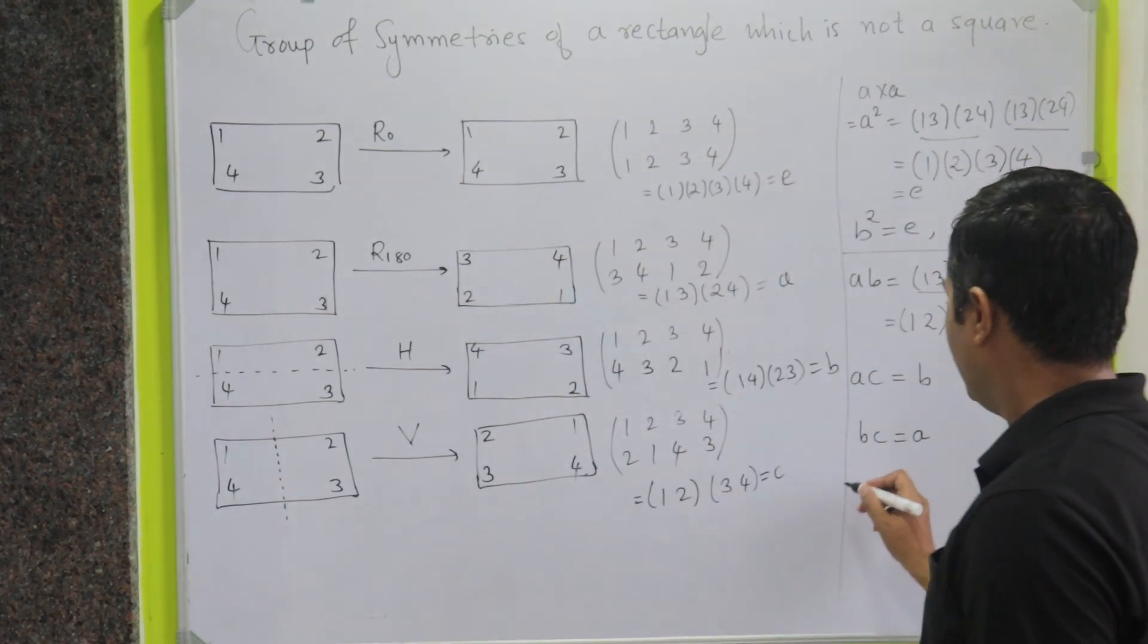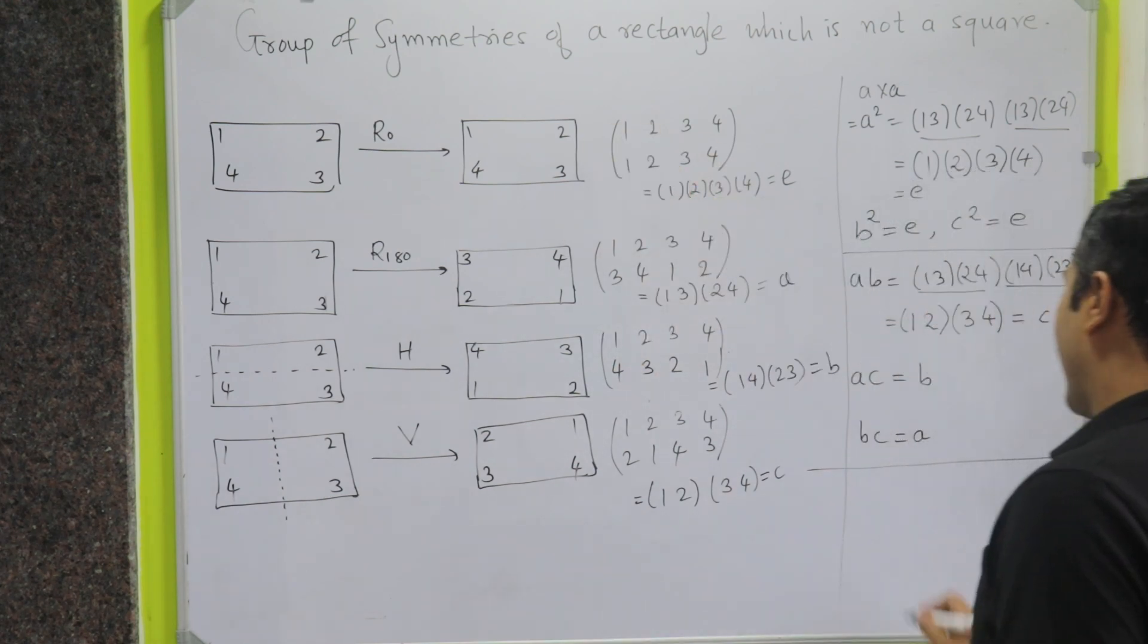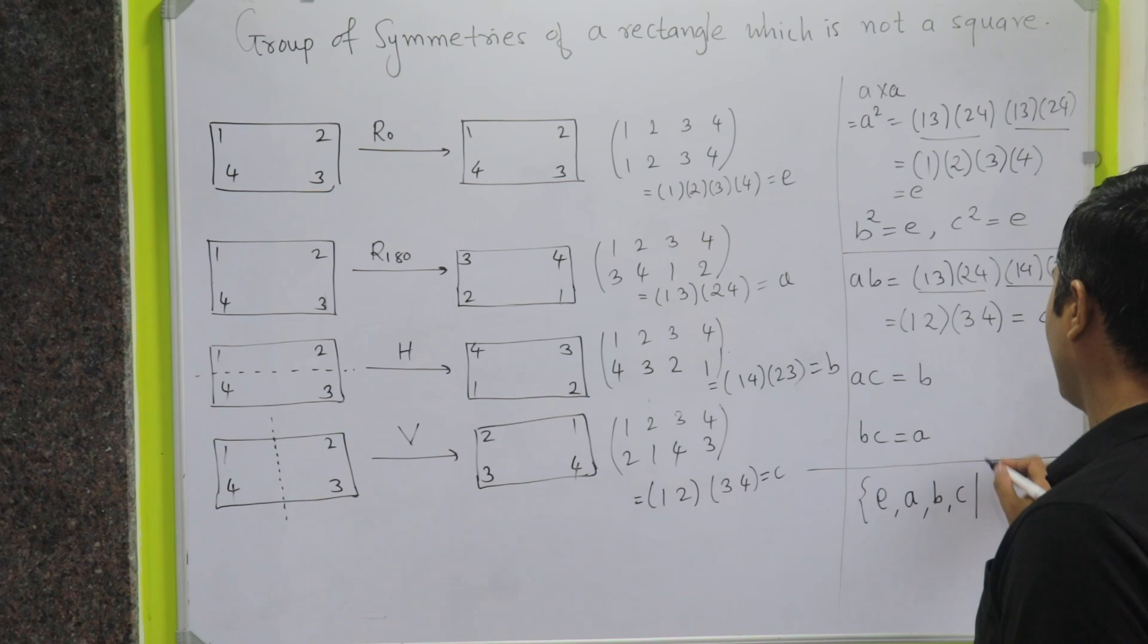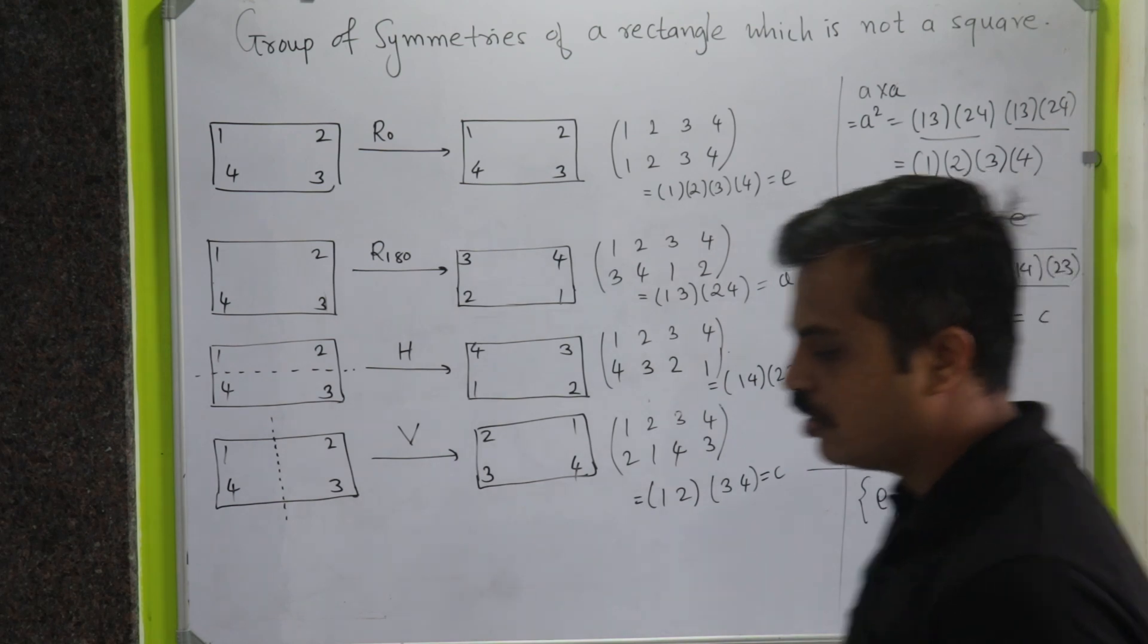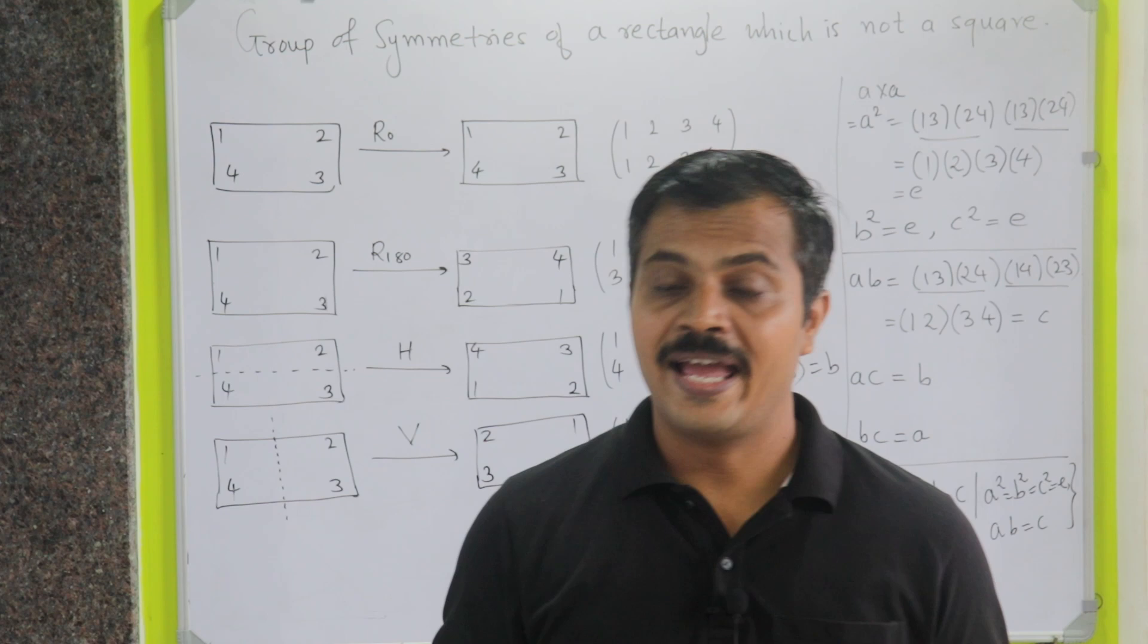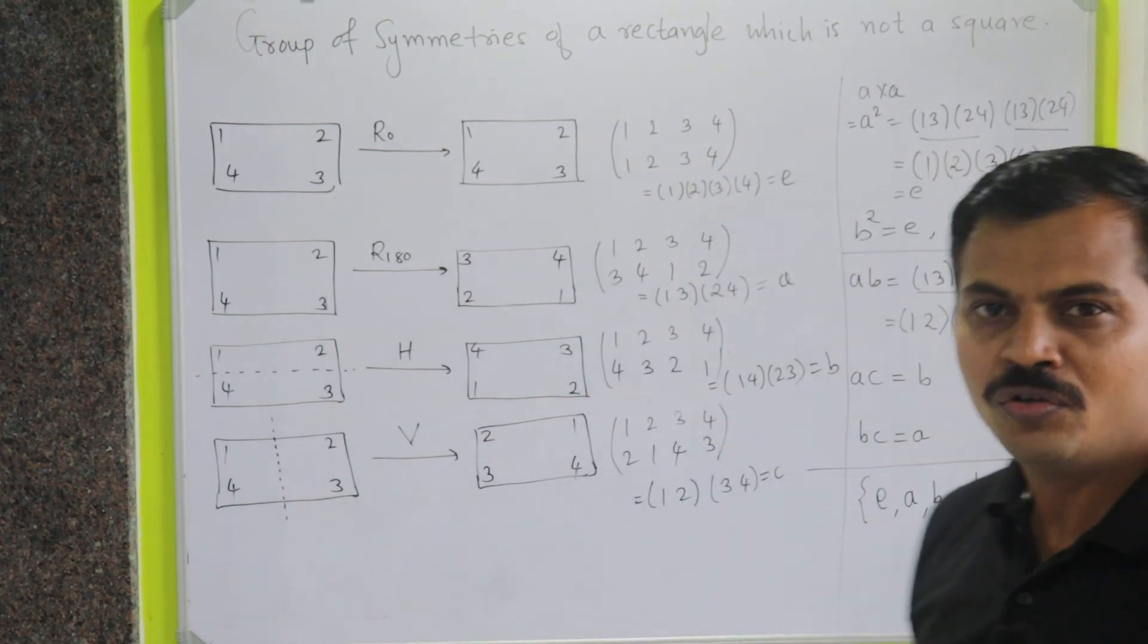I mean, this group, that is group of symmetry of a rectangle, is actually nothing but collection of E, A, B, C such that we get A square is equal to B square is equal to C square is equal to E, and we are having multiplication of two elements is equal to the third element, that is C, and this actually is nothing but what the Klein four group.